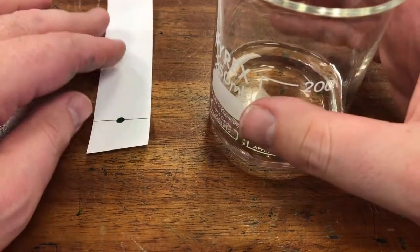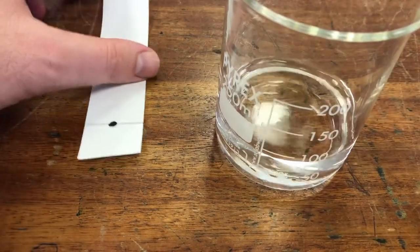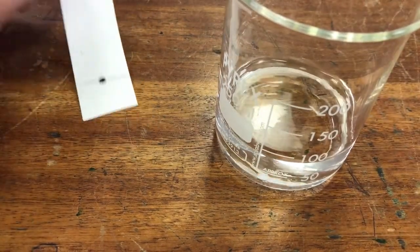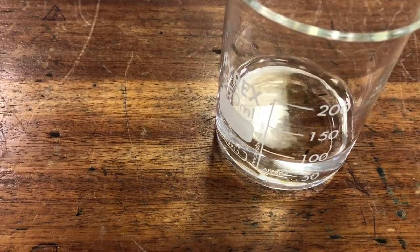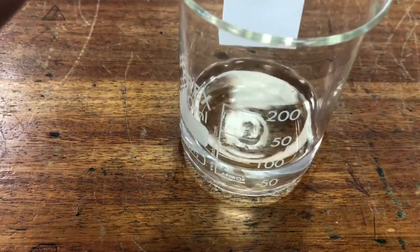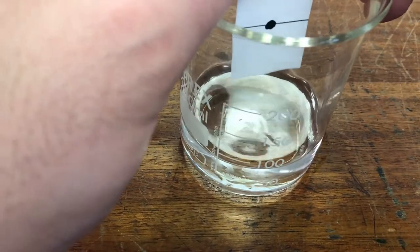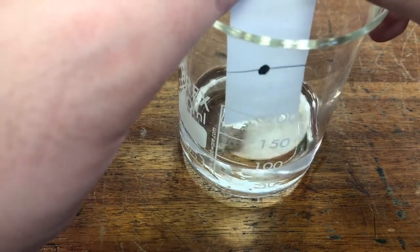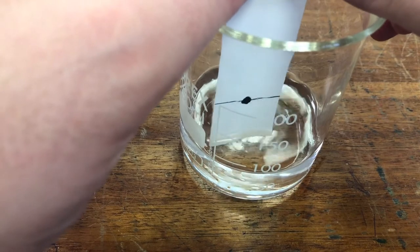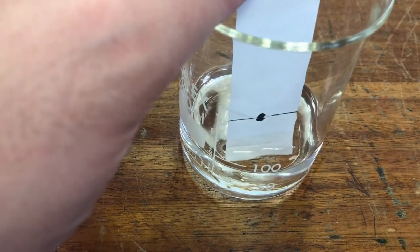And what I need to do is place the piece of filter paper with the pencil line and the dot of ink into the water, but I need to place it carefully so the solvent doesn't go above the pencil line.